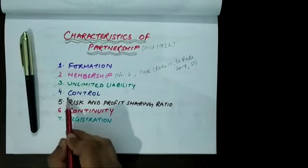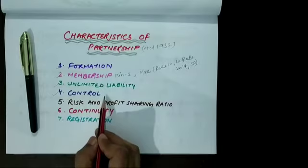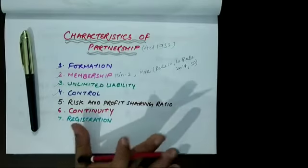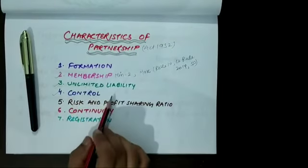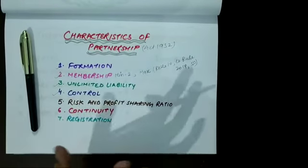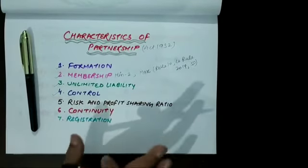The fourth one is control. The management and control of partnership lies in the hands of all partners. All decisions are taken with the consent of all partners. Whatever decisions are made, they are discussed among all partners with the consent of all.